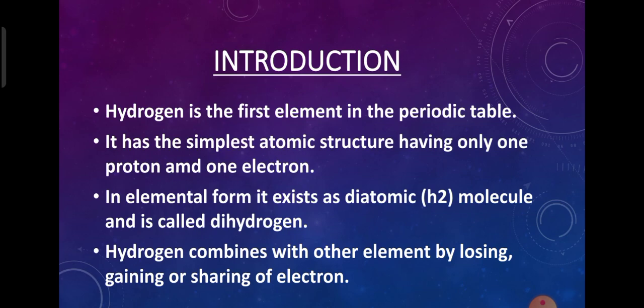First of all, what is hydrogen? Hydrogen is the first element in the periodic table. It has the simplest atomic structure, having only one proton and only one electron. In elemental form, it exists as a diatomic molecule, H2, called dihydrogen. Hydrogen combines with other elements by losing, gaining, or sharing of electrons.